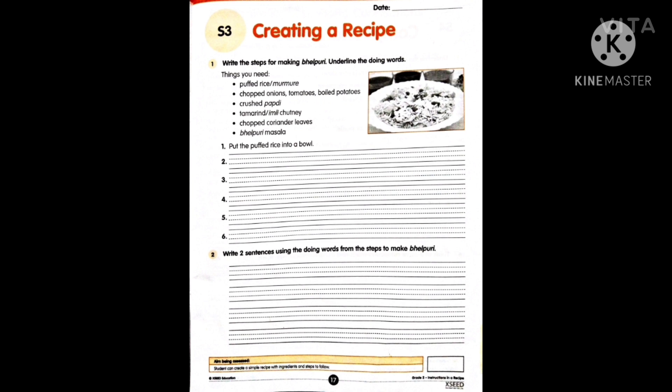For the second question, write two sentences using the doing words — the action verbs — from the steps you used in the first question. Based on those verbs, try to write two more sentences about another step or thing related to making bhel puri. Use action words and doing words to prepare sentences in the second question and complete your volume. Thank you, kids!